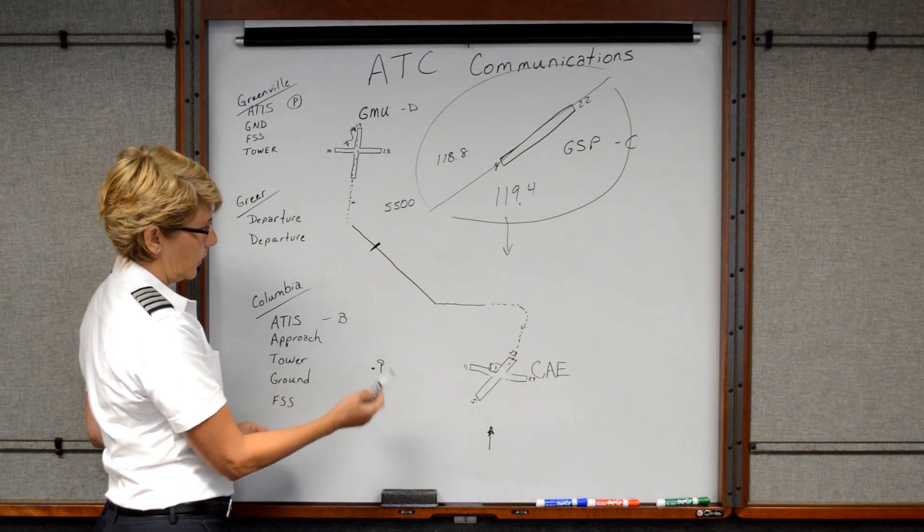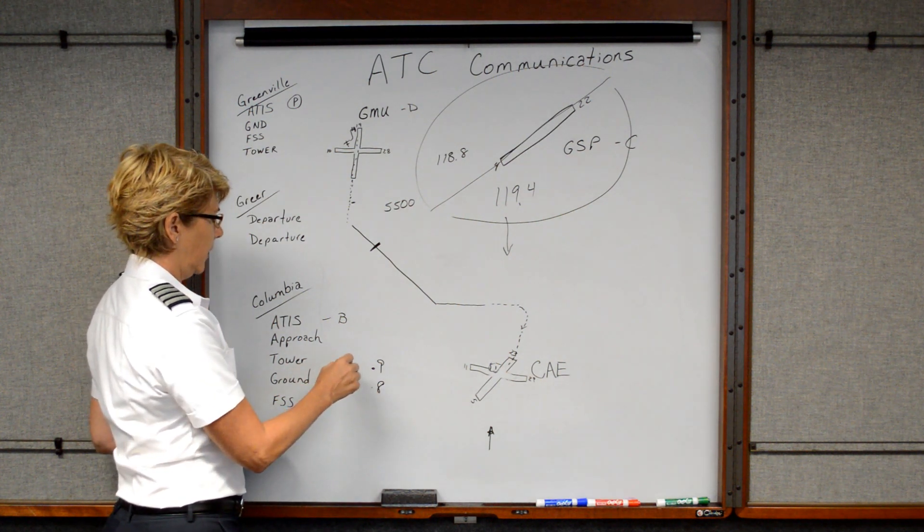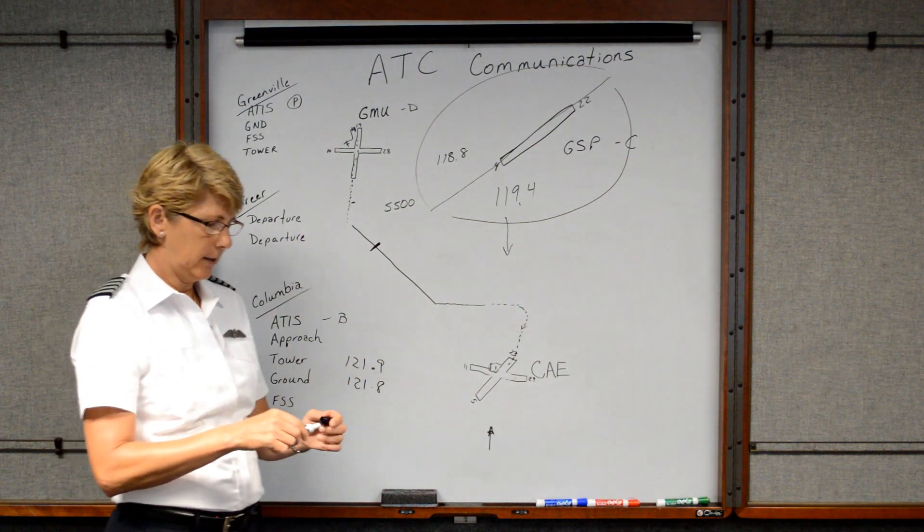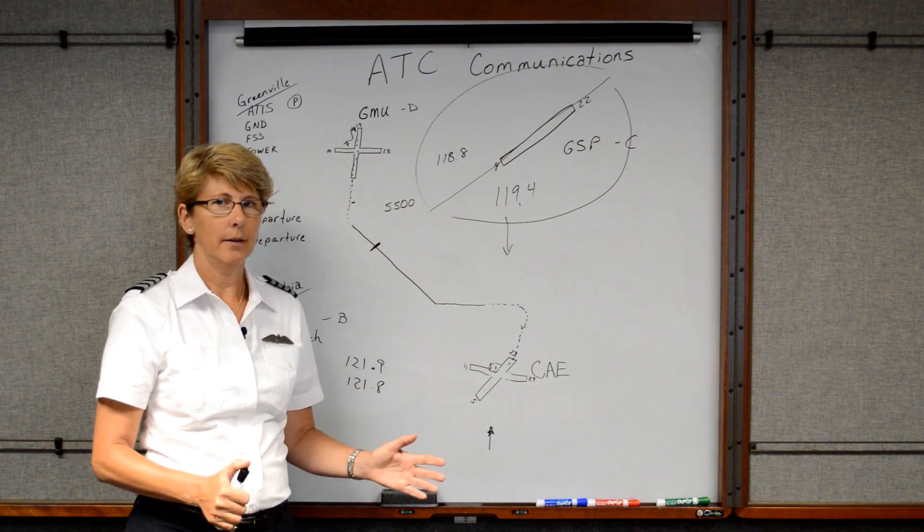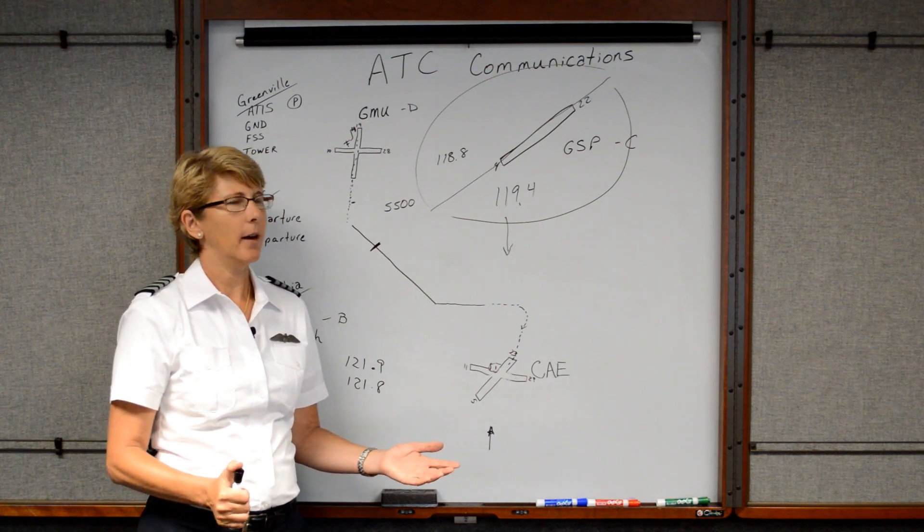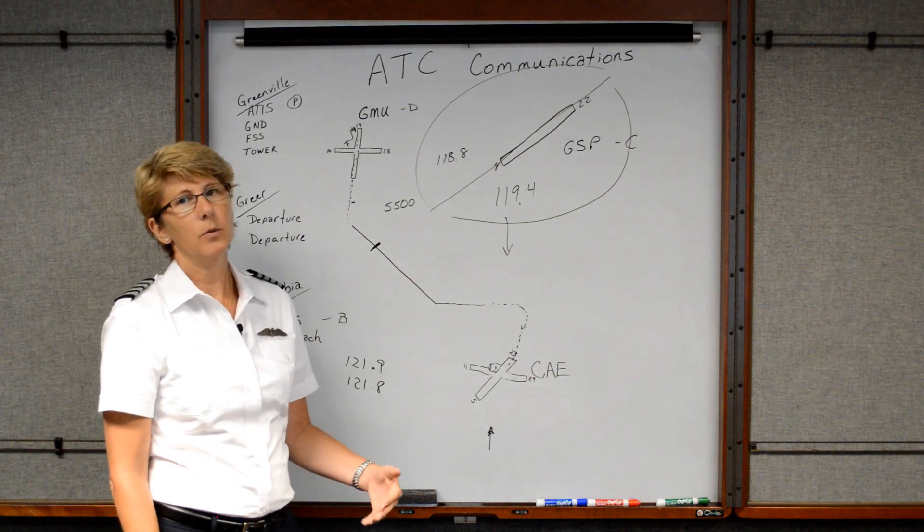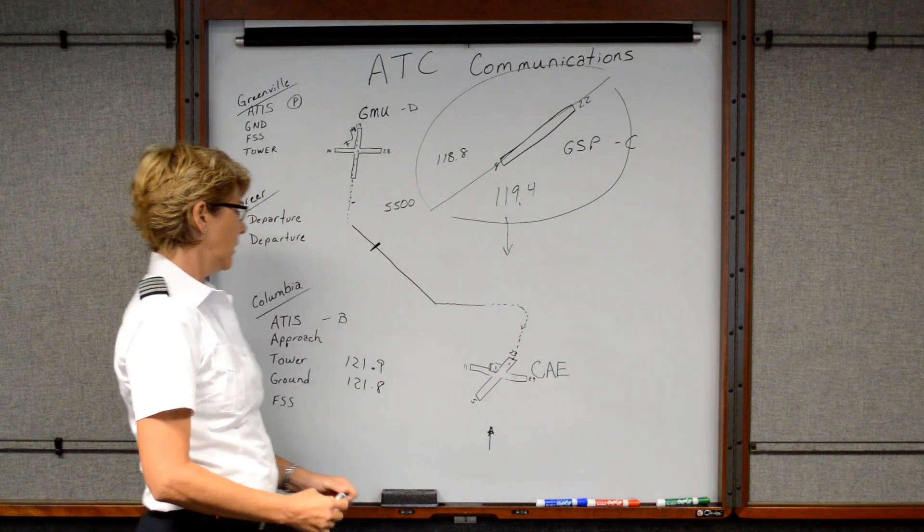They don't give you the whole frequency sometimes because it's so clearly understood that it's one, two, one point nine or one, two, one point eight. So sometimes you might hear them shorthand it and they'll say contact ground on point niner. And you're like, what kind of frequency is that? Well, it's pretty much, like I said, understood it's one twenty one point eight or one twenty one point nine is very common.